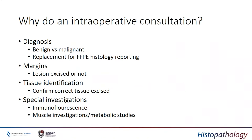It can also be used as a replacement for formalin-fixed paraffin-embedded FFPE histology, i.e. what would be termed normal histological processing. In some parts of the world it is done to obviate the need for the expensive equipment for FFPE processing. It's also of use for margins of a lesion — is the lesion excised or not? It can be used for tissue identification: has the surgeon got the right piece of tissue? Frozen section material can also be used for certain other investigations such as immunofluorescence or muscle, neural, or metabolic studies.